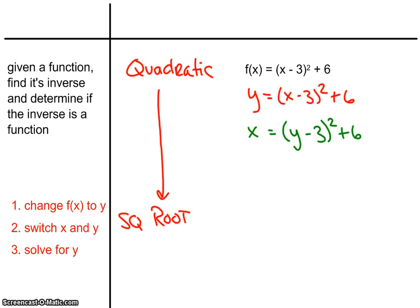because our goal again is to get y by itself so eventually I have to get it out of the parentheses how do I get it out of the parentheses well undo the square with the square root